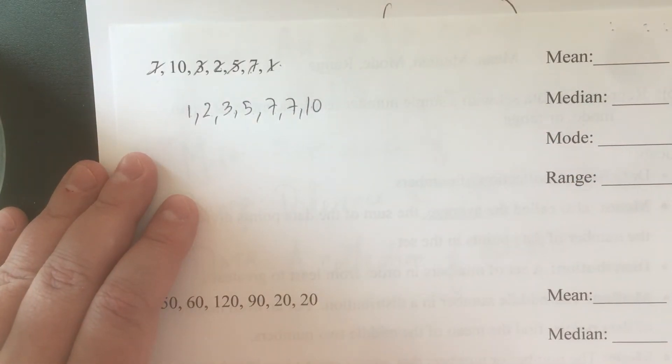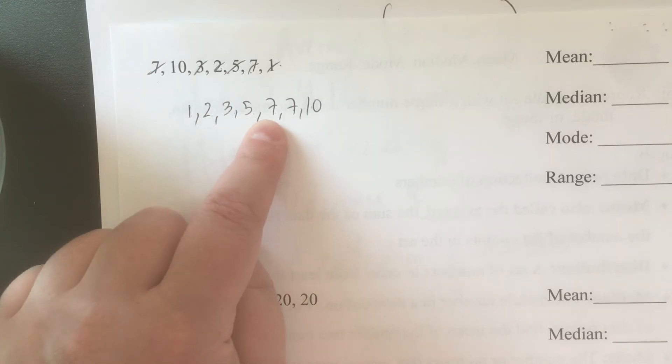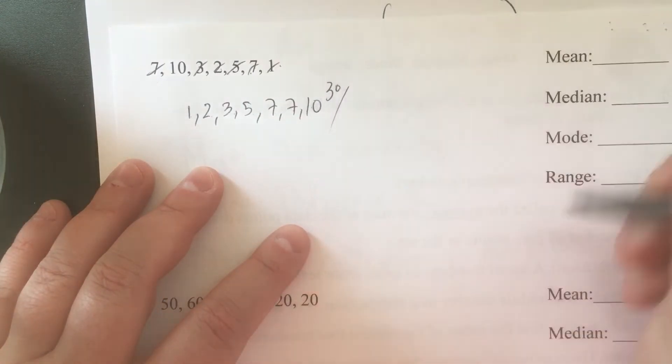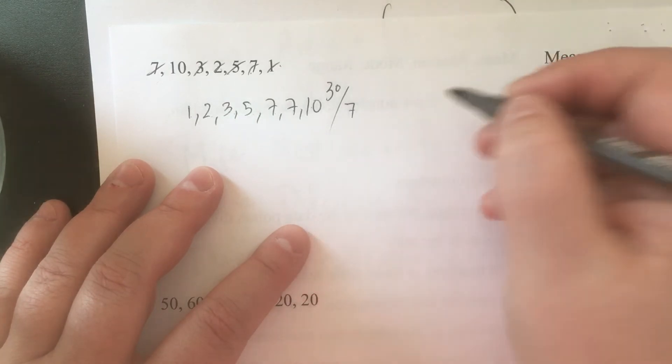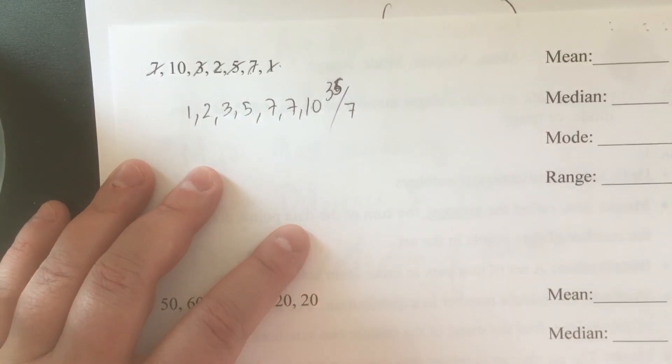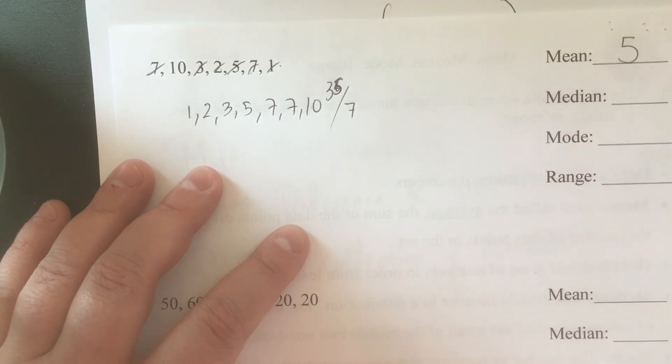Let's start with the mean. 1 plus 2 is 3, plus 3 is 6, plus 5 is 11. 7 plus 7 is 14, plus 7 is 21, plus 7 is 28, plus 10 is... wait, 35. So 35 divided by 7 is 5.